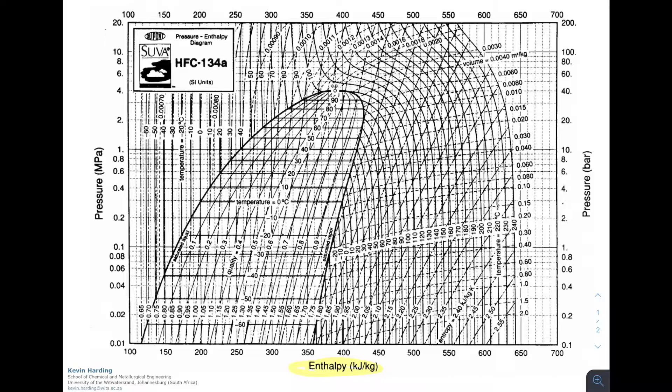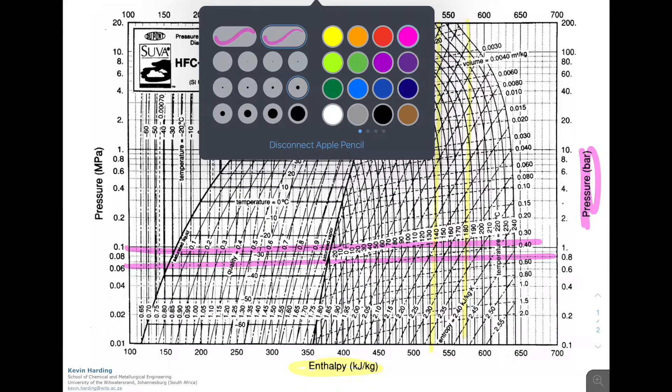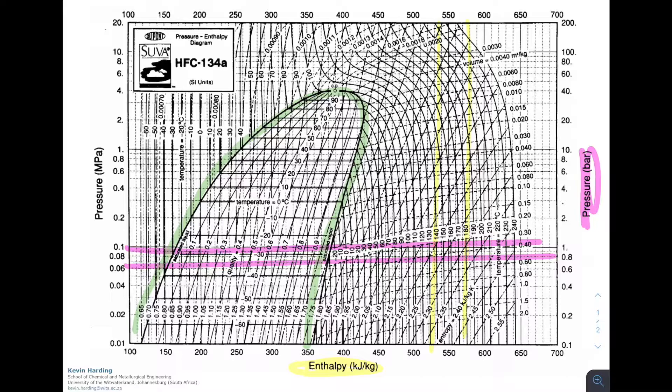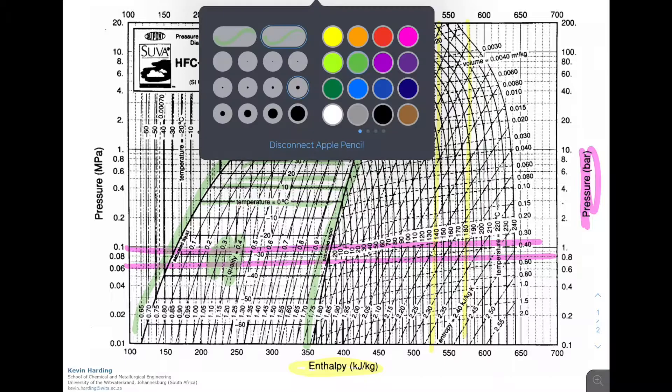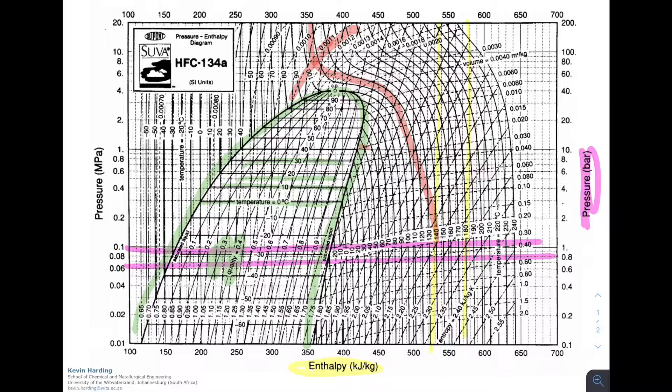The last diagram is for HFC-134A — an enthalpy-pressure diagram with enthalpy on the x-axis and pressure values running left to right. As before, there is a saturation line from liquid to vapor, with temperature and pressure values inside the bubble, quality lines at 0.3 and 0.4, and various other lines following the S-curve. Please make sure you can follow all of these lines and see exactly what has been given on these diagrams.